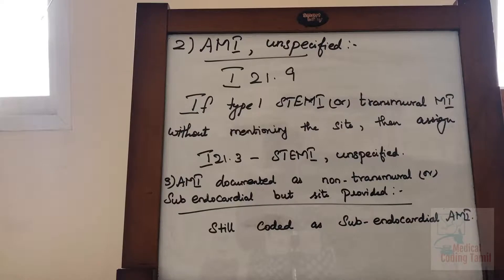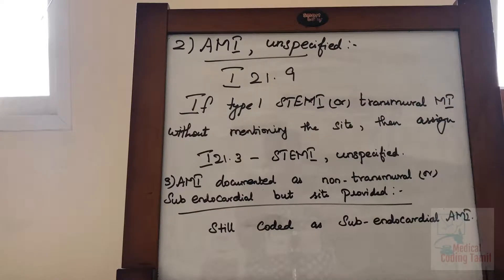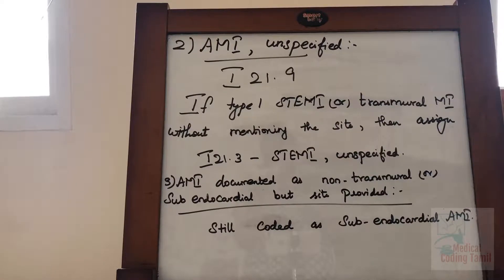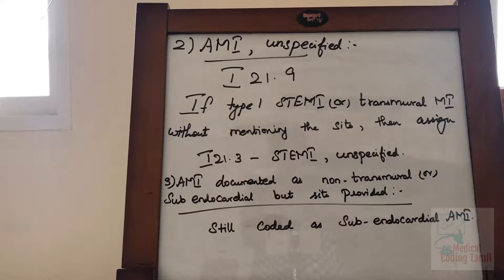Now we are going to see AMI — Acute Myocardial Infarction. If it is unspecified, how we have to code? For Acute Myocardial Infarction unspecified, the code is I21.9. If type 1 STEMI or transmural MI is documented without mentioning the site, then we have to assign I21.3 — STEMI unspecified.